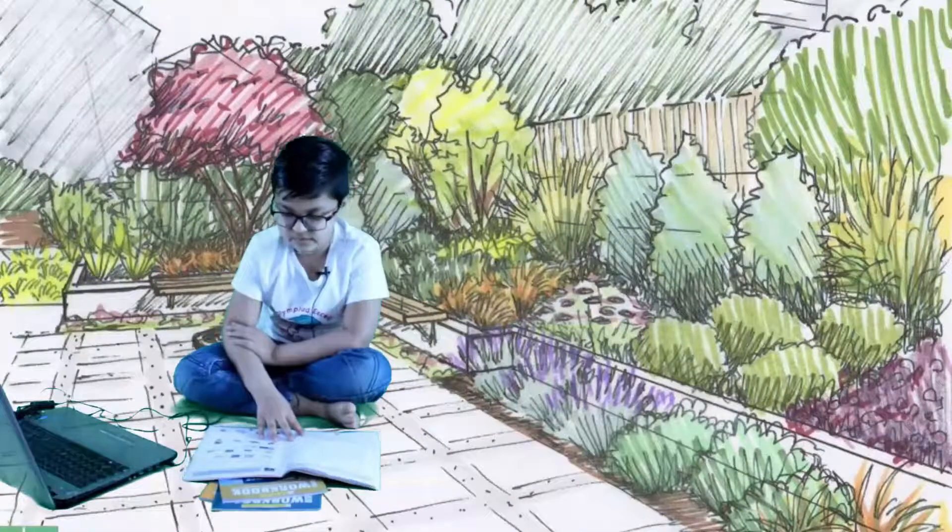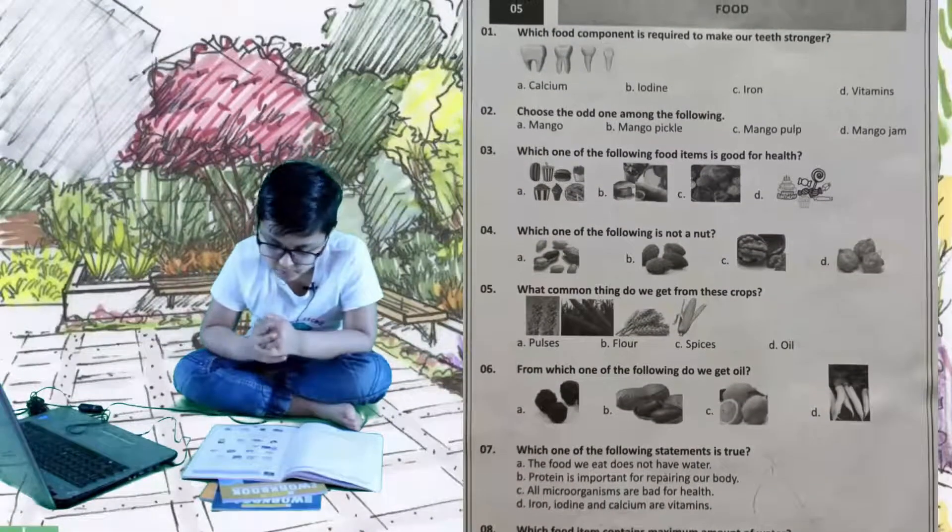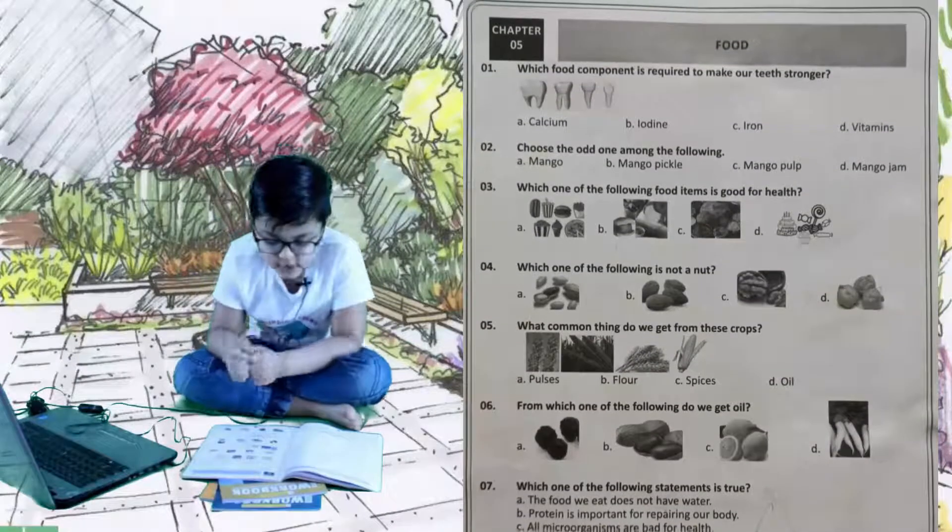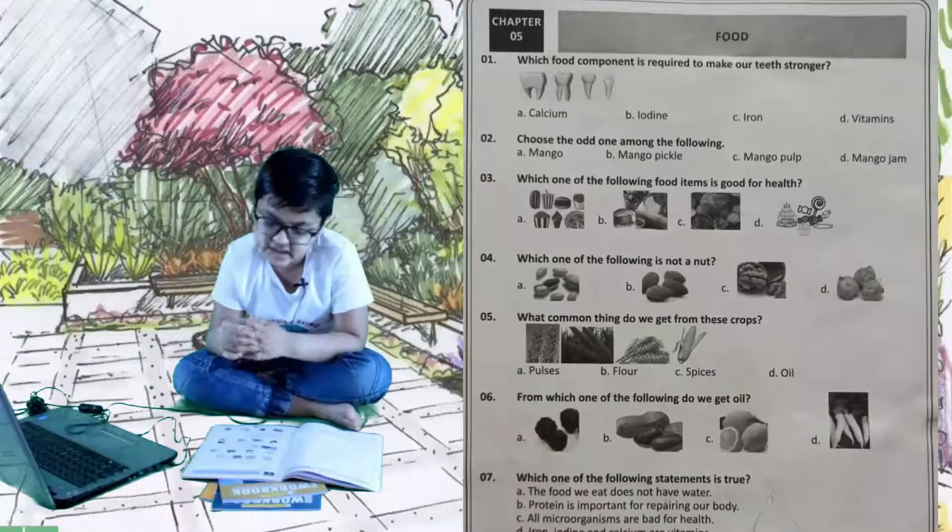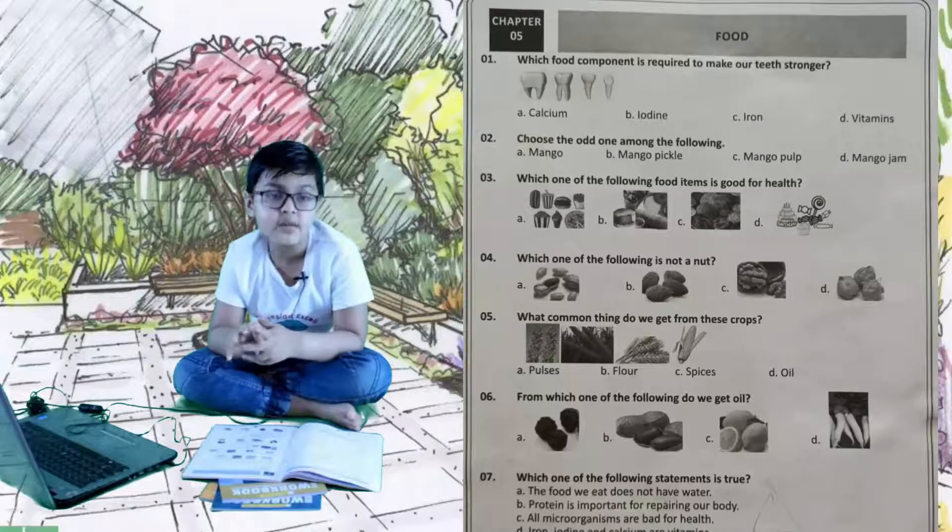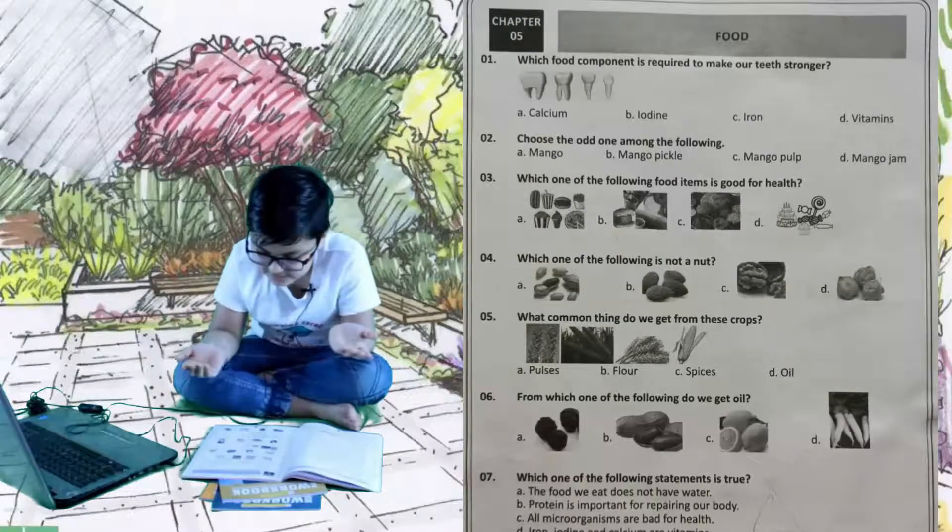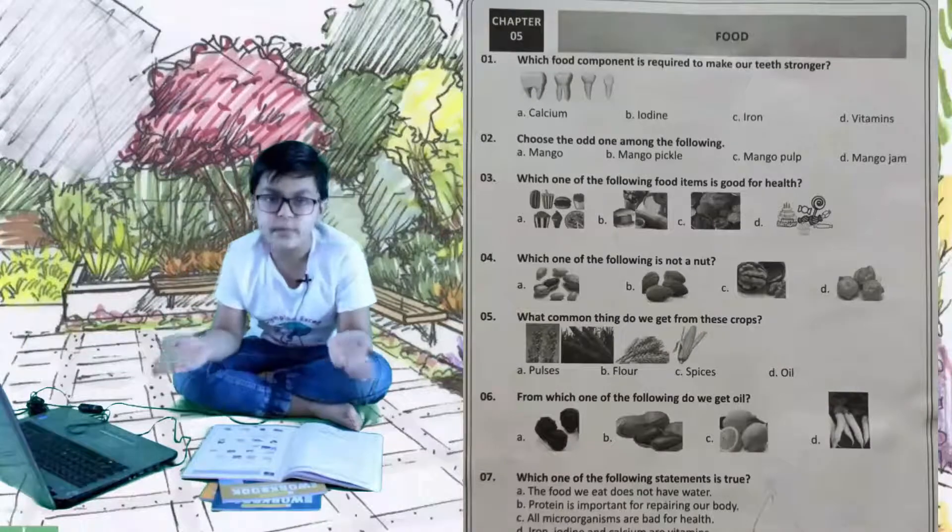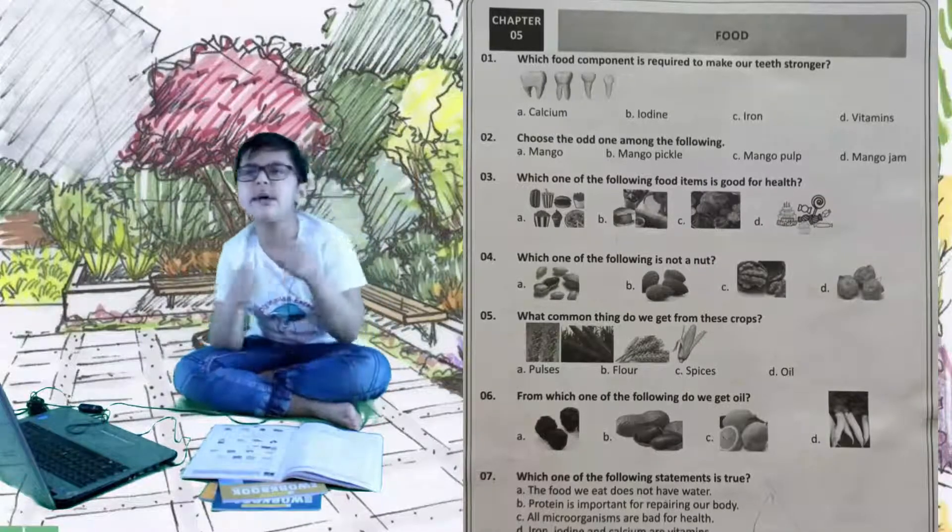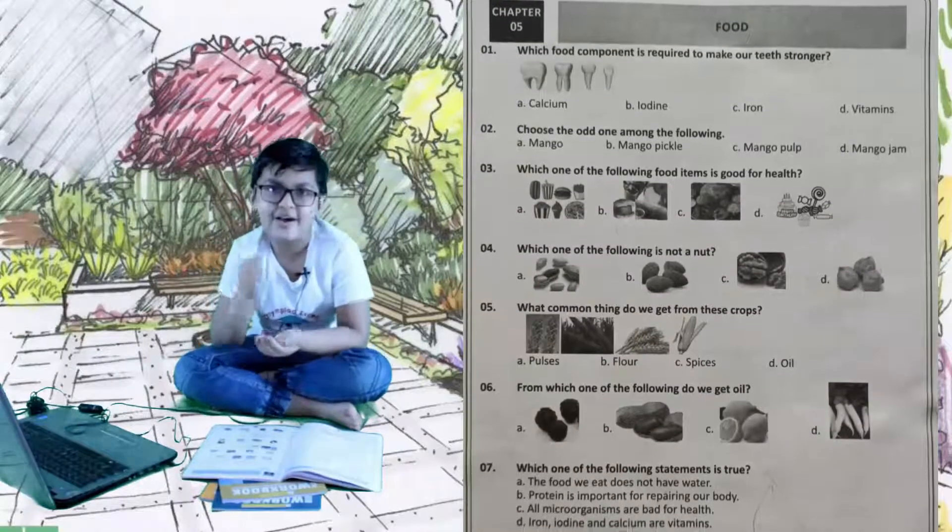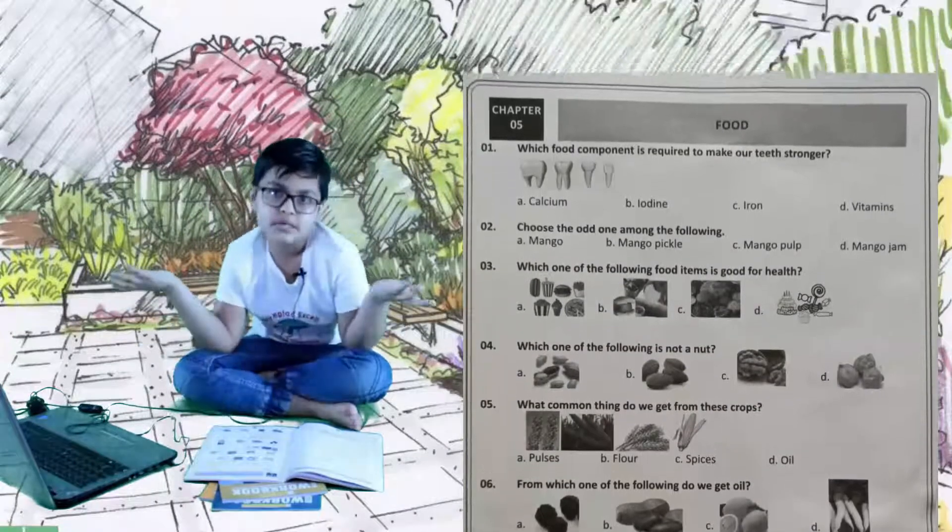Let's move to the next chapter, chapter 5 is food. Question number one: which food compound is required to make our teeth stronger? A is calcium, B is iodine, C is iron, and D is vitamins. The right answer is A, calcium. Doctors sometimes give calcium to us. Next question: choose the odd one out among the following. A is mango, B is mango pickle, C is mango pulp, and D is mango jam. The right answer is A because all of these are made up of mango, but B, C, and D are like upgrades from mango.